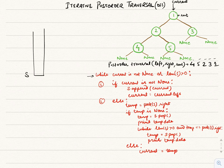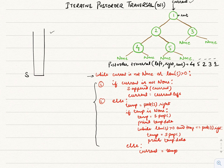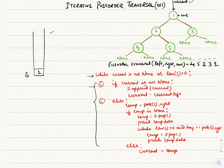We first initialize two things: current to the root and an empty stack s. We follow these conditions until current is null or the stack is empty. Since current is pointing to root and is not none, it falls under the first condition — we append current to the stack, which is node 1, and move current to current's left.